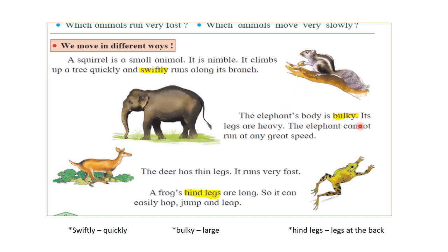The elephant's body is bulky and its legs are very heavy, so it cannot run at great speed. But the deer has a thin body and thin legs, so it runs very fast. The hind legs of a frog are long, so it can easily hop, jump and leap.